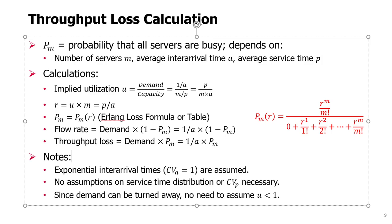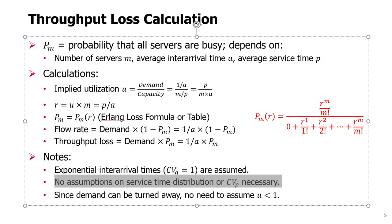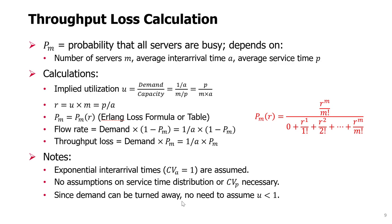Some comments: exponential inter-arrival times are assumed, so the coefficient of variation for inter-arrival times is 1. No assumption is made on service time distribution. And since demand can be turned away, we no longer need utilization to be less than 1. We can work with implied utilization of 100% or even higher, unlike waiting line models. Implied utilization can be higher than 1 because we assume some demand will be lost.